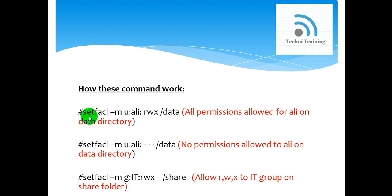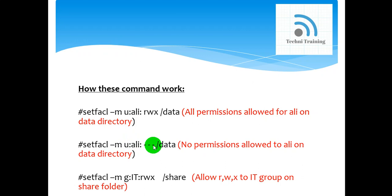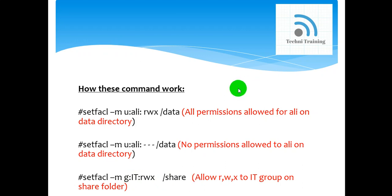In the terminal we will write: setfacl -m, where -m stands for modification. In the last lecture I told you that three dashes means no permission — that the user has no read, write, or execute permission on the folder. If you want to apply a permission on a group folder, we write setfacl -m g (small g is used for group application), and the group has full permission on the shared folder. To apply these commands we move to the command terminal installed in the Linux operating system.